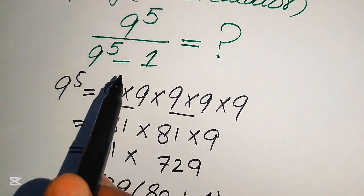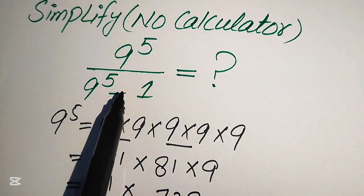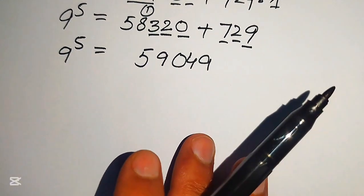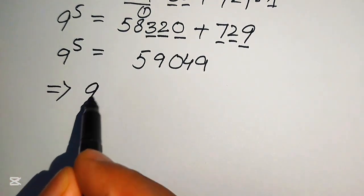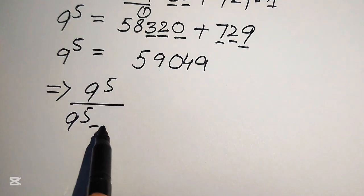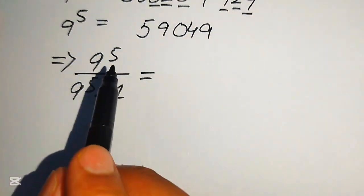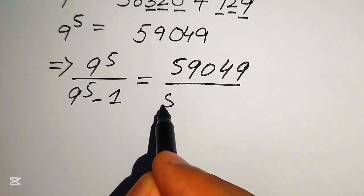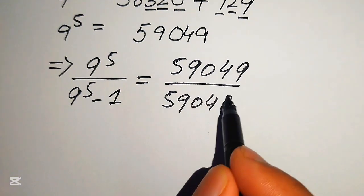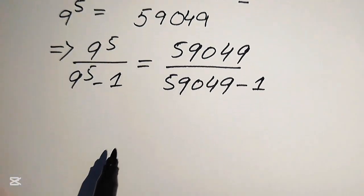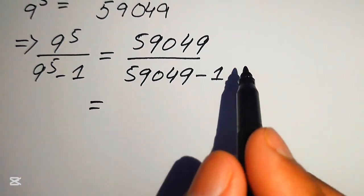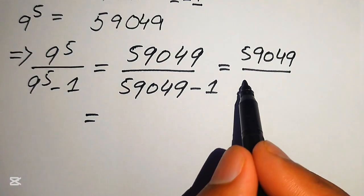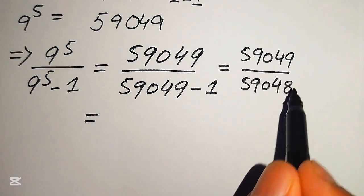Now we move back and substitute this value into the original algebraic expression. We put the value of 9 to the power of 5 in both places: 59,049 divided by 59,049 minus 1. In the next step, we subtract the denominator: 59,049 minus 1 equals 59,048. So we have 59,049 divided by 59,048.